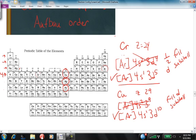So common exceptions to the aufbau are chromium, copper, silver, and gold.